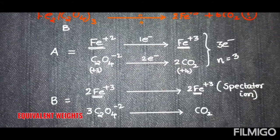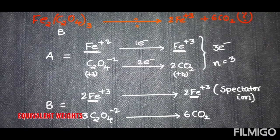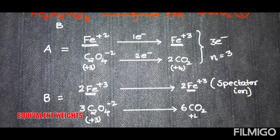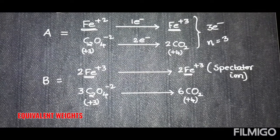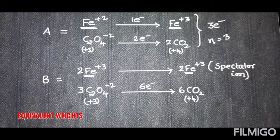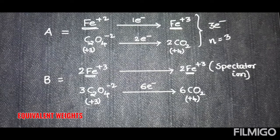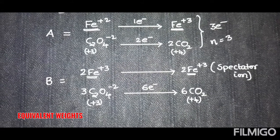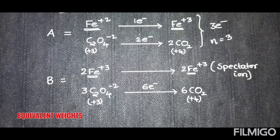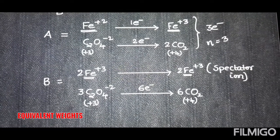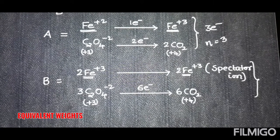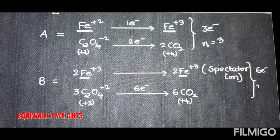However, C₂O₄²⁻ changes into CO₂. One oxalate ion produces two CO₂, but in the given molecule there are three C₂O₄²⁻ ions, so six CO₂ are produced. Carbon oxidation state goes from +3 to +4 — a change of one per carbon — but the compound contains six carbons in total, so six electrons are released from the oxalate part. With no electron change from the cationic part, the total electrons from molecule B is six, so n-factor is six.